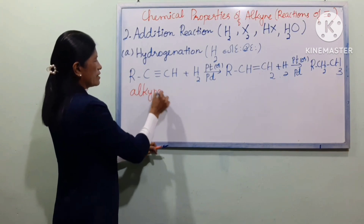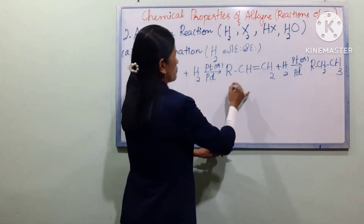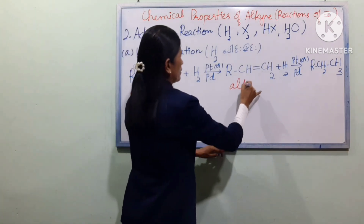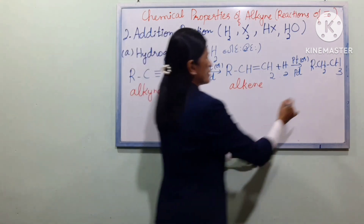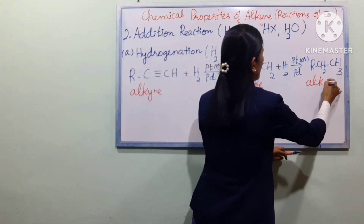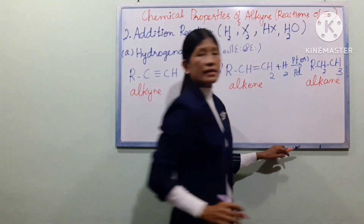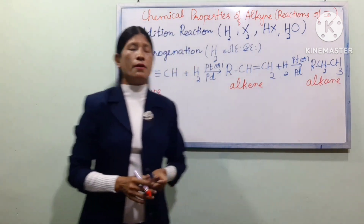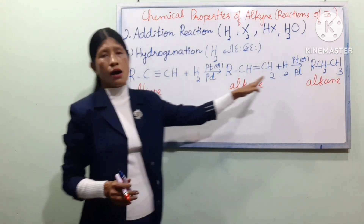Alkynes react with H2 to form alkenes, and alkenes react further to form alkanes. The sequence is: alkyne → alkene → alkane. The general equation involves R groups on the carbon chain.